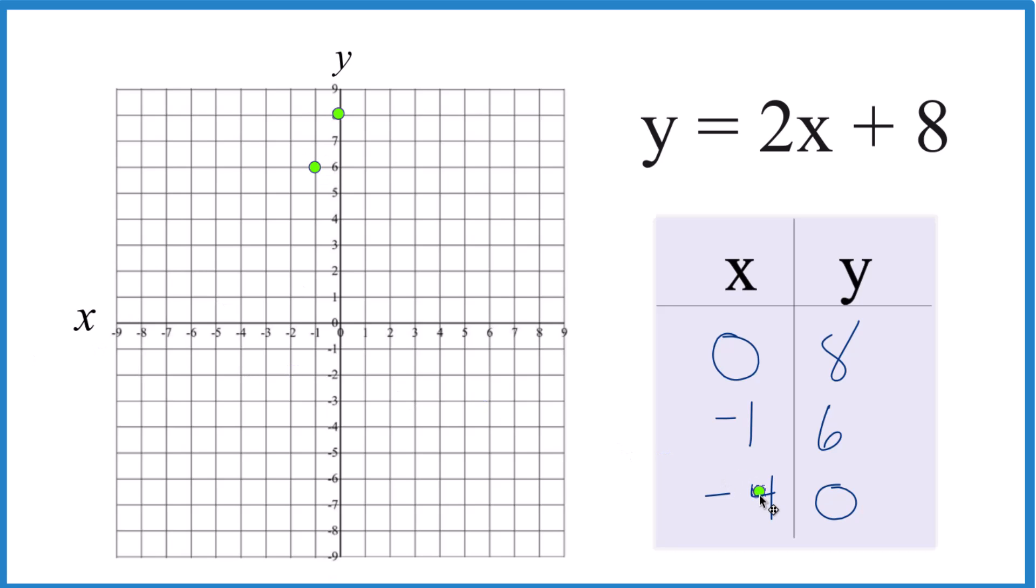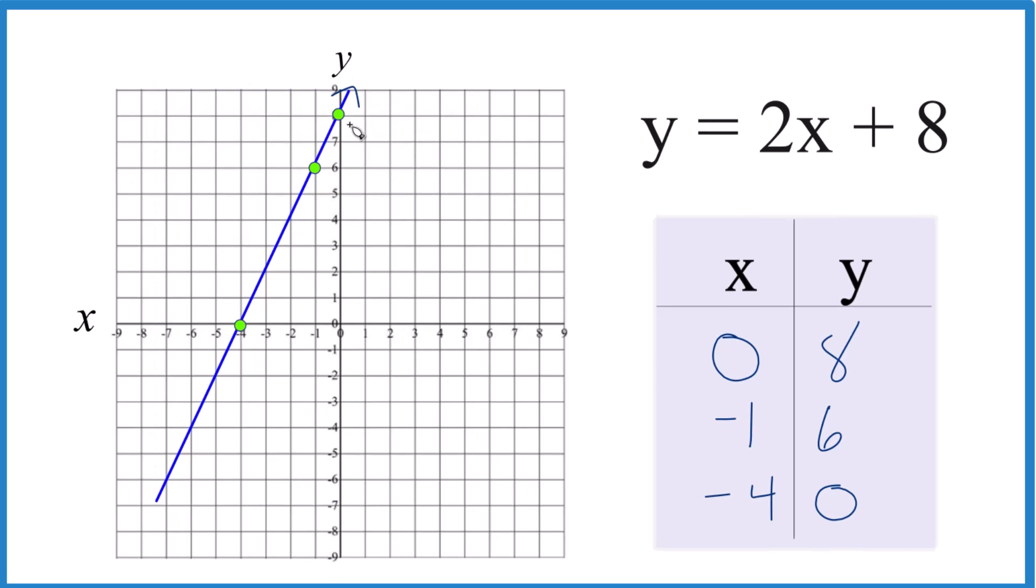And finally, x is negative 4, and y is 0, right there. We have three points. Let's put a line through that. Then we'll put arrows here, show this goes to infinity.